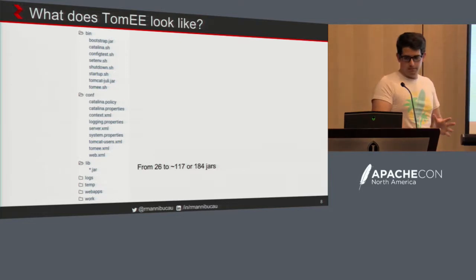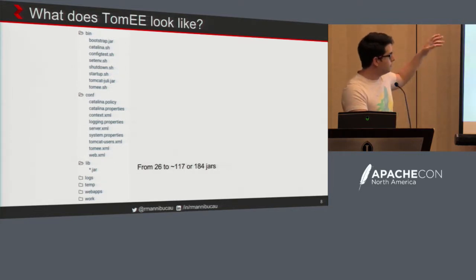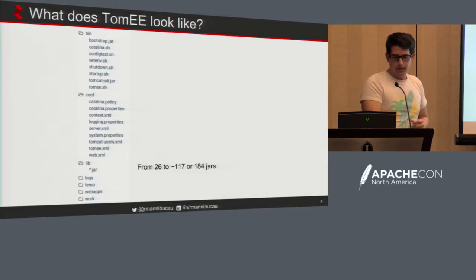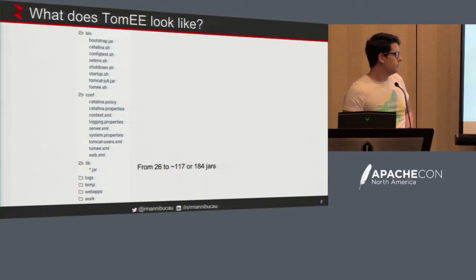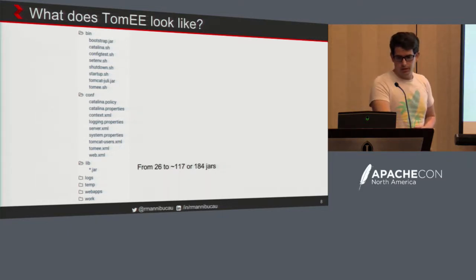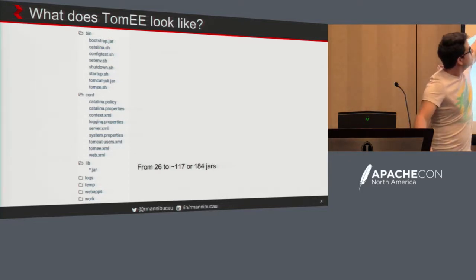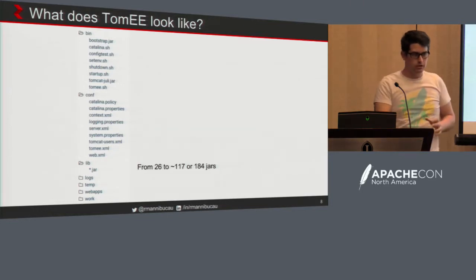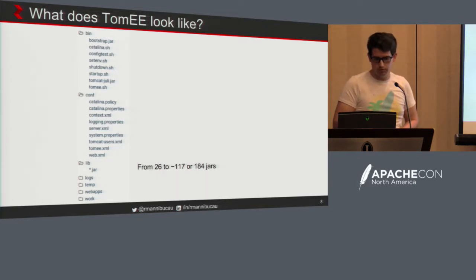TomEE is Tomcat. If you grab the TomEE archive and unzip it, you'll see a bin folder, a conf folder, a lib folder, etc. It looks like Tomcat. If you dig a bit into the files, you'll see a few differences. The lib folder is bigger — we have about five times more specifications in the web profile. And we have tomee.sh and tomee.xml, which are not in Tomcat — they're specific to TomEE. But globally, it looks like Tomcat, and if you want to start it you'll run catalina.sh or startup, depending on what you want to do.